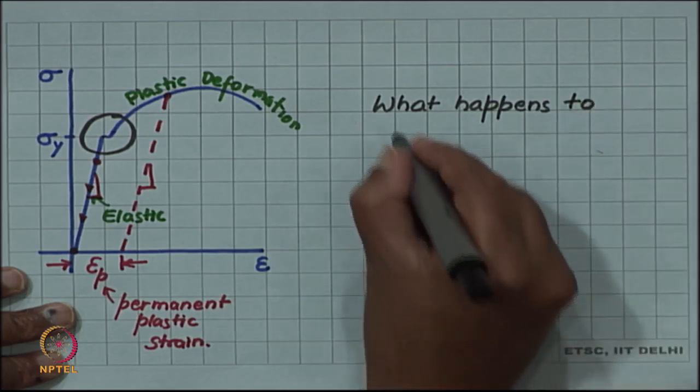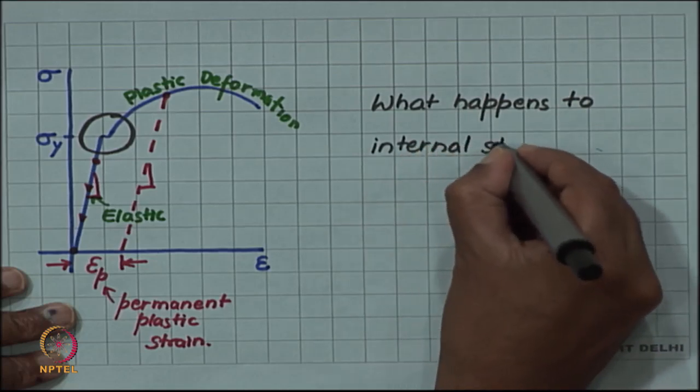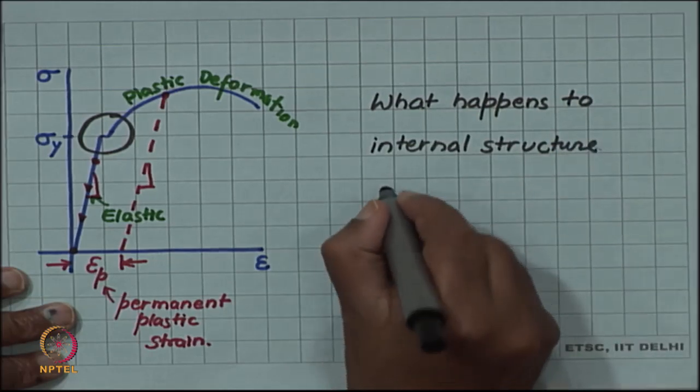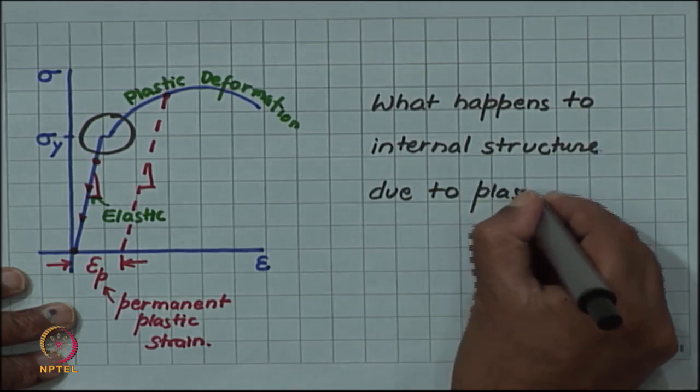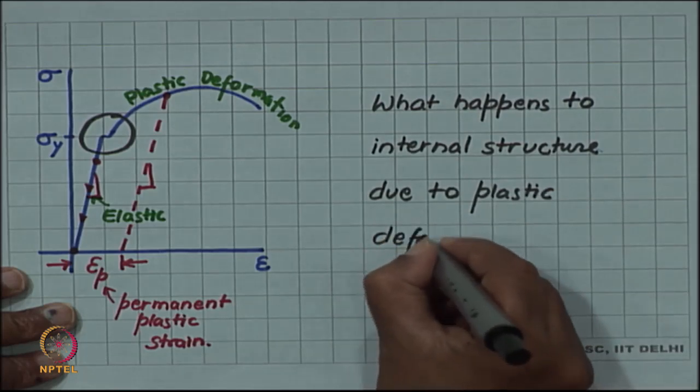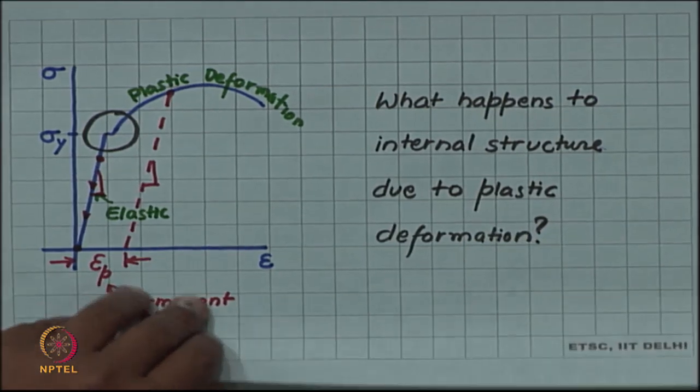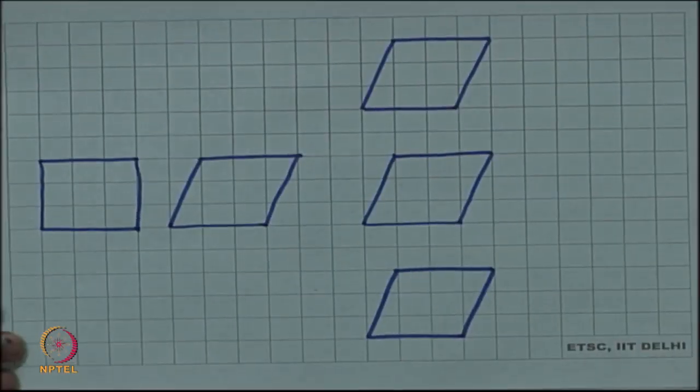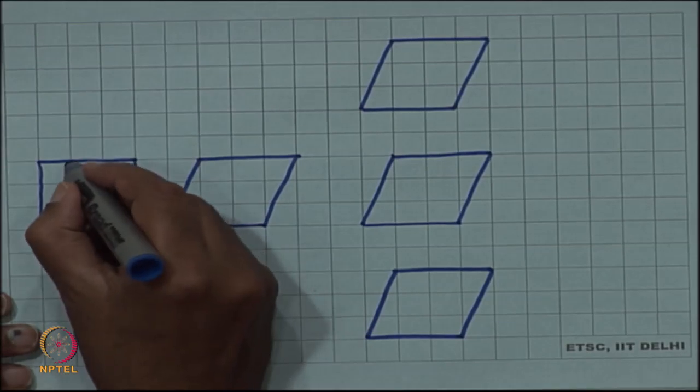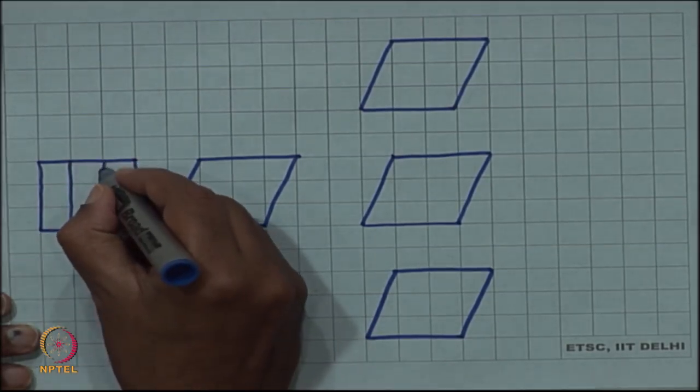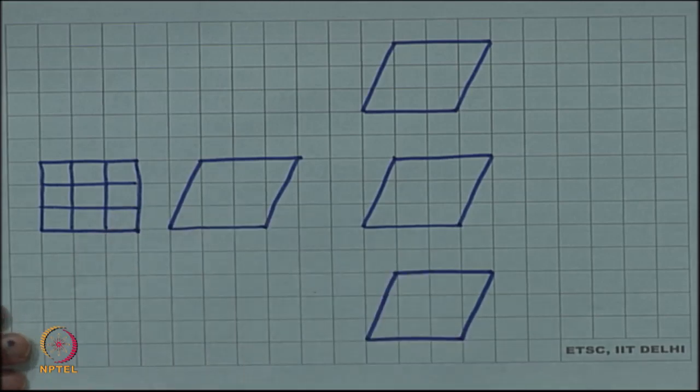What happens to the internal structure of the surface due to plastic deformation? Let me make my question a little bit more precise. Let us think that we have a block, I have shown you here in 2D, but you can think of a 3-dimensional cubic block. I am saying that this material is crystalline. We know that most metals are crystalline, for example, copper is face-centered cubic.